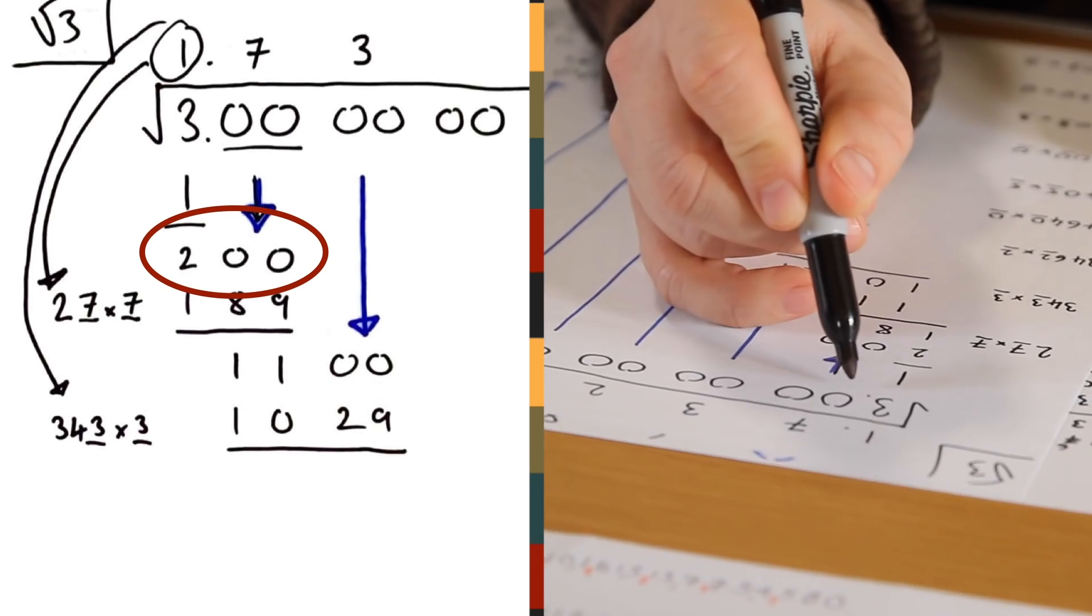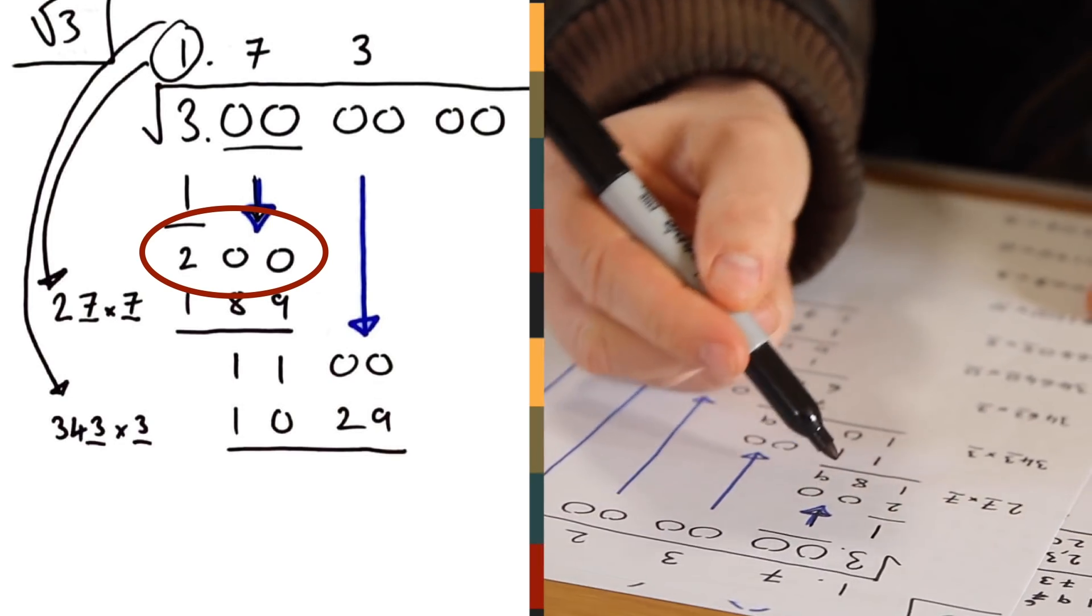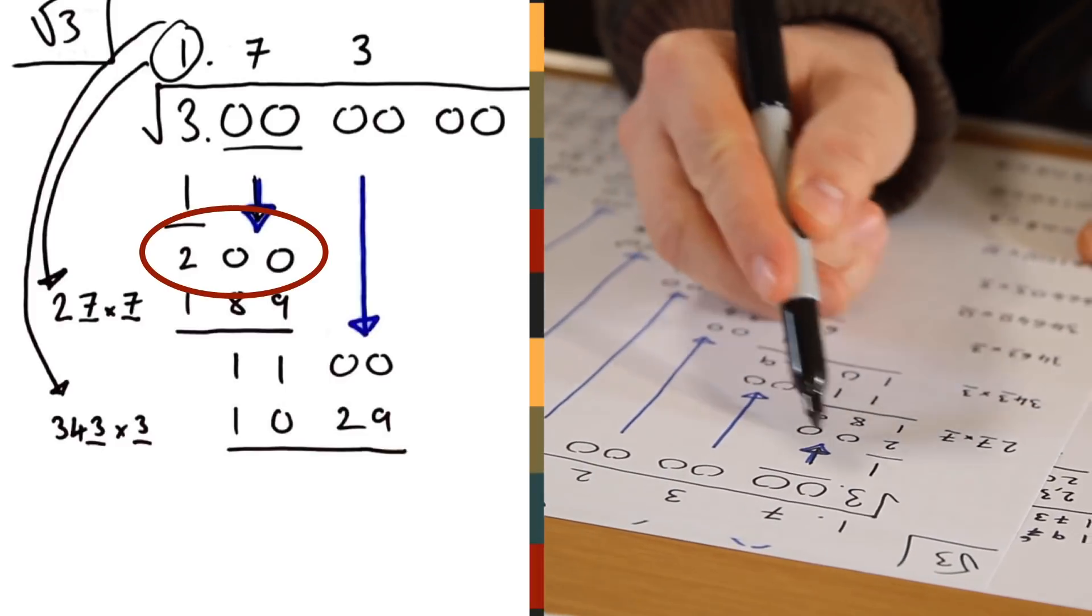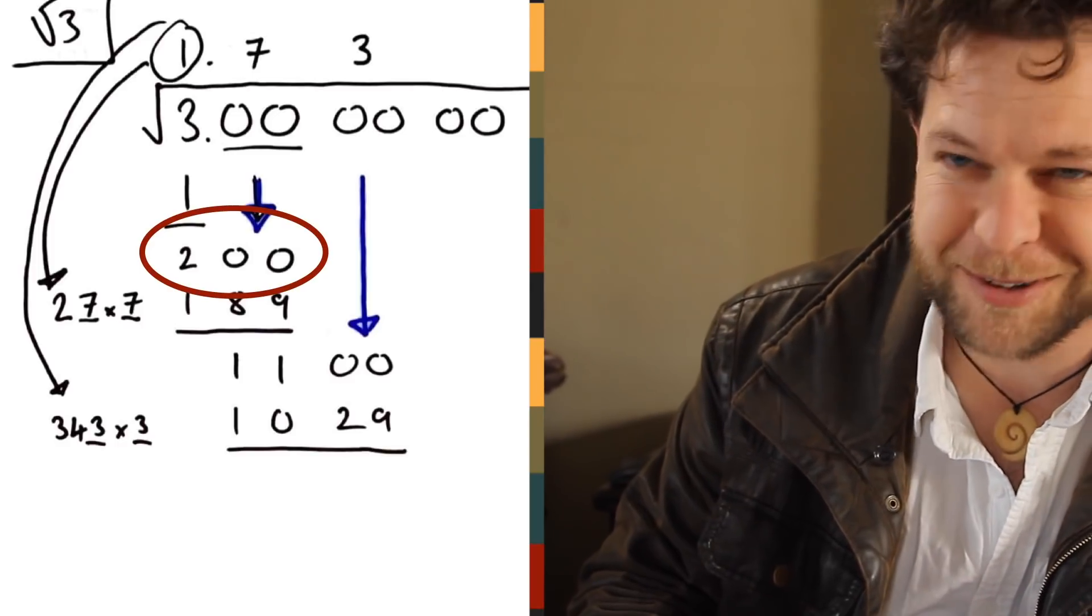Then we bring down a double zero in this case, because we've got a bunch of zeros to go. Whatever these digits were, we'd bring two of them down, and we've got a 200 left to work with now. And this is the slightly weird bit.